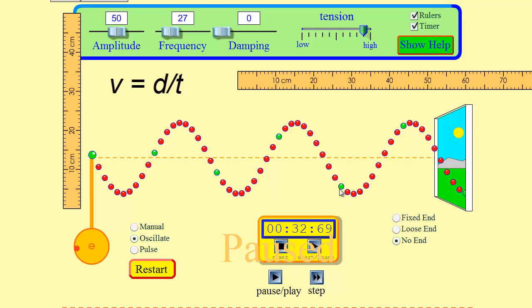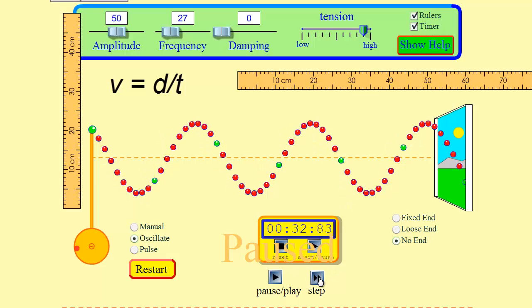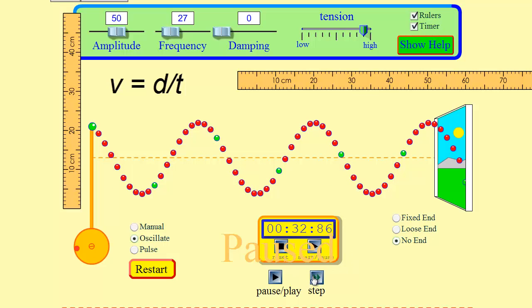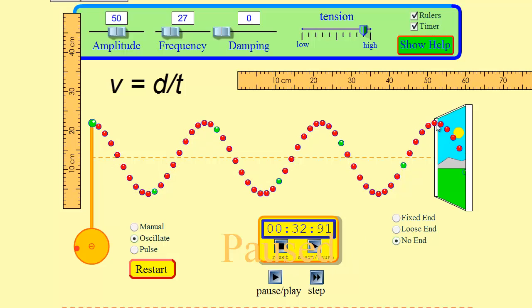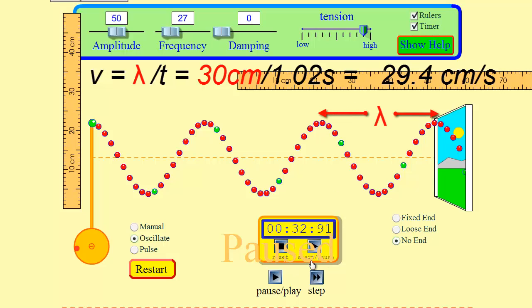So all I have to do is step it forward and get my crest at the start of the window, roughly there, and time how long it takes to travel to the next crest. That distance will be one wavelength. So when I hit my stopwatch all I've got to do is time how long it takes to get to the next crest.